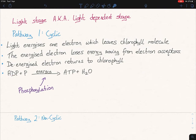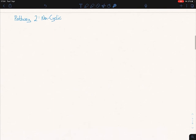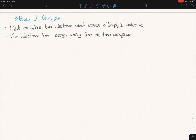Pathway two is known as non-cyclic, fairly similar to that of pathway one. Light energizes electrons which leave the chlorophyll molecule. This time we're dealing with two electrons. I always think of two for pathway two. The electrons lose energy from electron acceptor to electron acceptor. Now, this is where they differ.